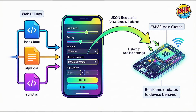The remaining three files — index.html, style.css, and script.js — are responsible for the web UI. They allow you to adjust brightness, select themes, tune gravity, modify physics presets, set flip angle, and even trigger actions like refill or flip directly from your phone. These UI settings are then sent back to the ESP32 as JSON requests, where the main sketch applies them instantly.